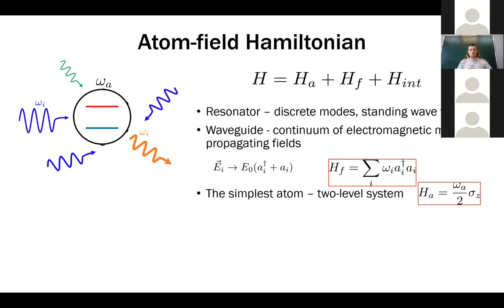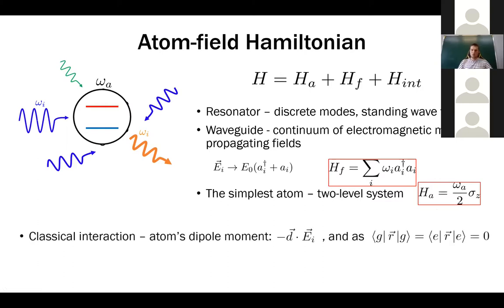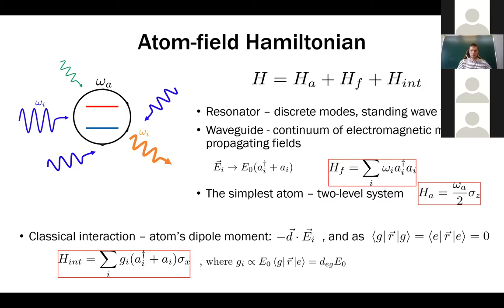The simplest system to consider is a two-level system. Natural atoms have many levels, but with superconducting circuits we can always find situations where only two levels are important for the experiment. The atom Hamiltonian is just sigma-z, and the simplest interaction is when the atom feels the dipole moment of the electric field. After quantization, this gives a transverse interaction where each mode interacts with its own coupling constant g_i with the atom.